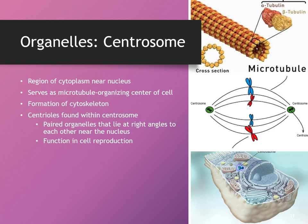It also shows how motor proteins grab onto the vesicles and the microtubule to transport those vesicles to the plasma membrane. In addition, the centrosome plays a big role in the formation of the cytoskeleton during cellular division, and the centrioles play a big role in cell reproduction as well. You can see in the middle image how the microtubules attach to the centromeres — the centers of the chromosomes — and as the cell divides, exact copies of the chromosomes are pulled into each cell.